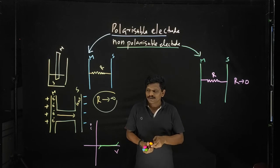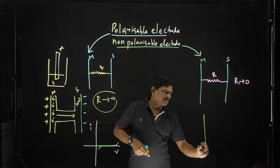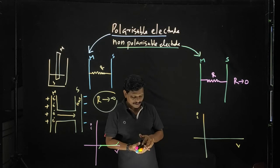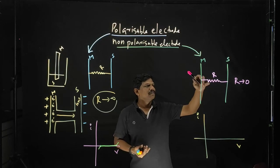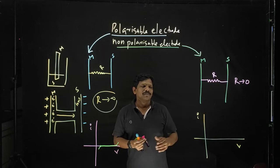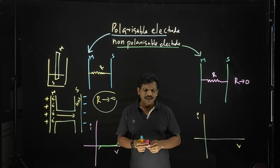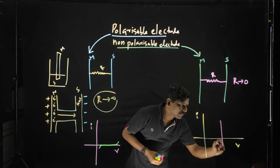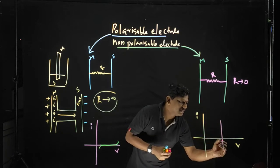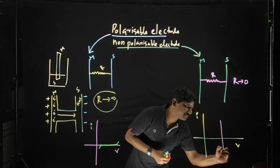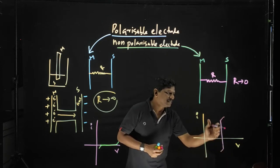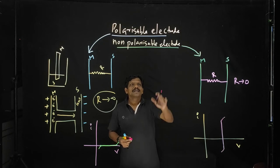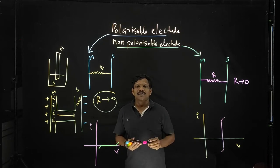How can you draw an IV curve for the non-polarizable electrode? This is your I and this is your V. Current will readily flow, but there is no change in potential. That means your line will be parallel to I — there is a change in current, but you can see a single potential here. That type of electrode is known as a non-polarizable electrode.